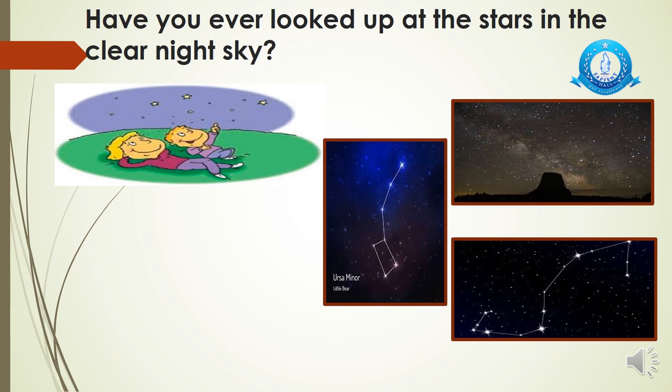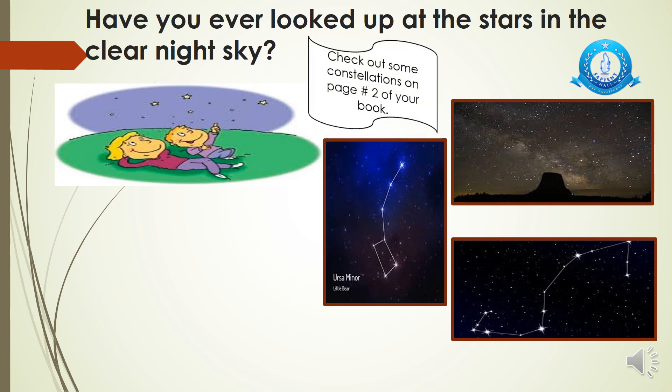This common shape is called the Little Bear. Check out some constellations on page two of your book — there are two constellations given: Cassiopeia and Ursa Major (the Big Dipper). These patterns made by joining stars are called constellations. When you join the stars and make different patterns, those patterns are known as constellations.